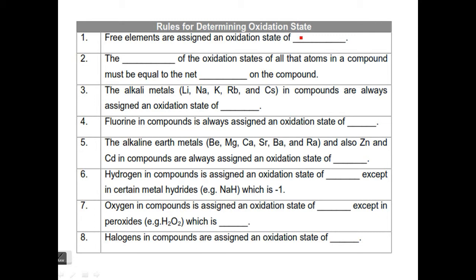So let's start with number one. Free elements are assigned an oxidation state of zero. So things like Cu copper as a solid, Fe as a solid, things like chlorine gas or bromine, for example. These are elements, so they're assigned an oxidation state of zero.